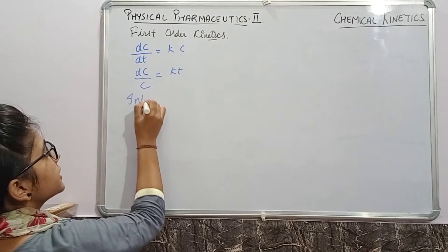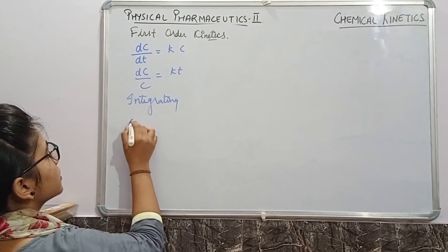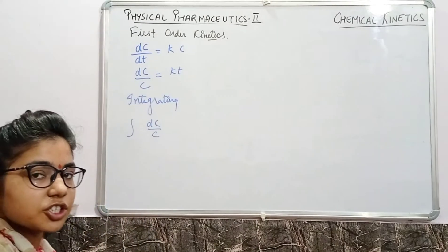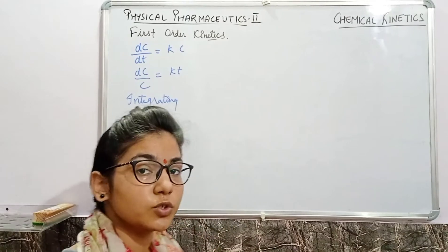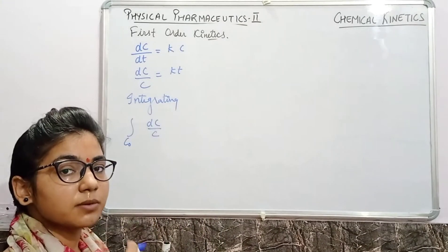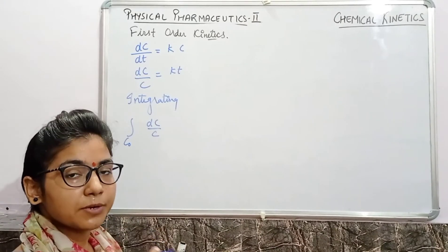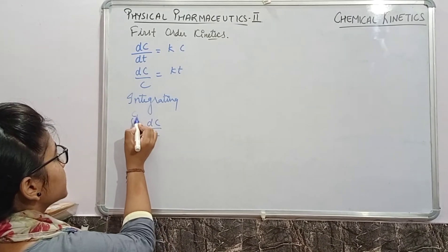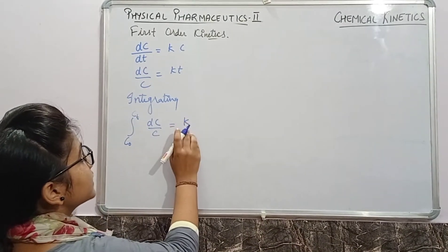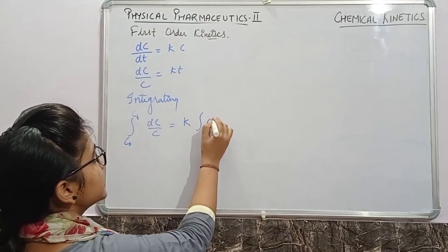The second thing you have to do is dc/c equals kt. Now after integrating this equation, dc/c, here the concentration at time zero was c naught, and at time t the concentration was ct.